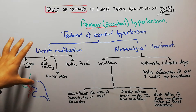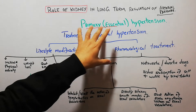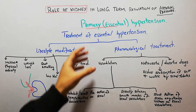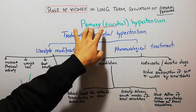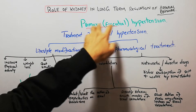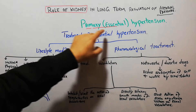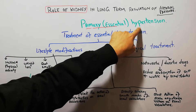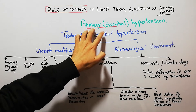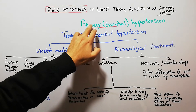Primary or essential hypertension is known as primary hypertension because the cause of the hypertension is not known. When the cause of the hypertension is known, then it is labeled as secondary instead of primary.